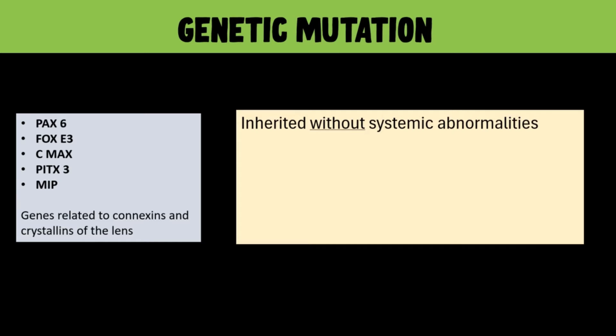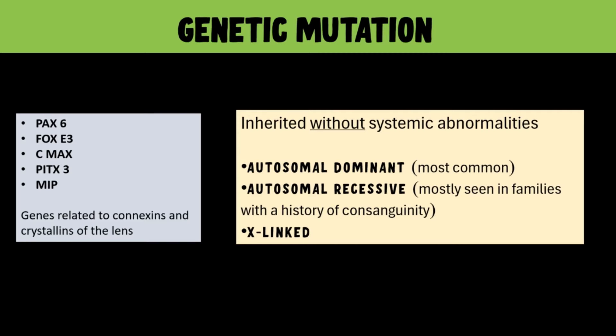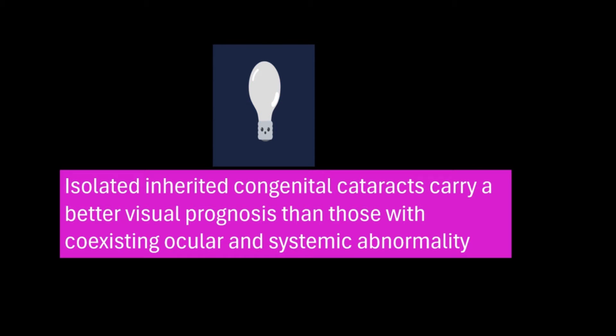First, we'll talk about the genetic mutations. Genetic mutations are likely the most common cause of bilateral cataract in children. They are the most common cause of bilateral cataracts in the pediatric population, and the most common inheritance is autosomal dominant, followed by autosomal recessive, and then X-linked inheritance. The autosomal recessive variety is mostly seen in families with a history of consanguinity.